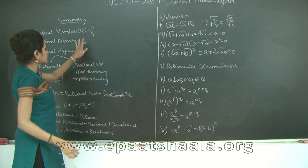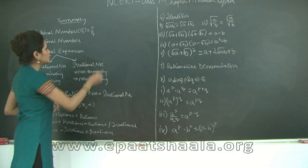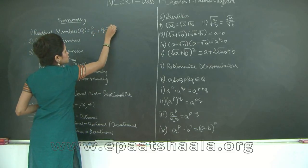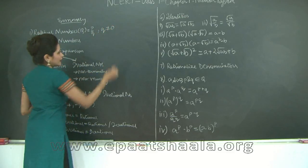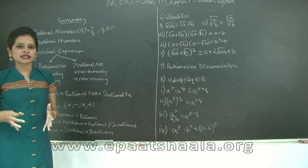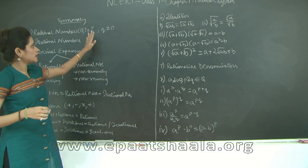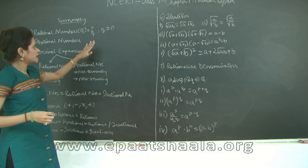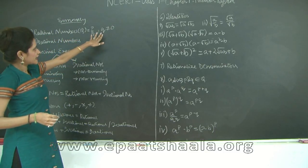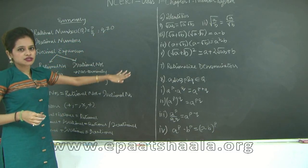Rational numbers are always in the form of a fraction p upon q, where q is not equal to 0. Why is q not equal to 0? Because if q is equal to 0, the answer would be infinity. That is why q is not equal to 0.